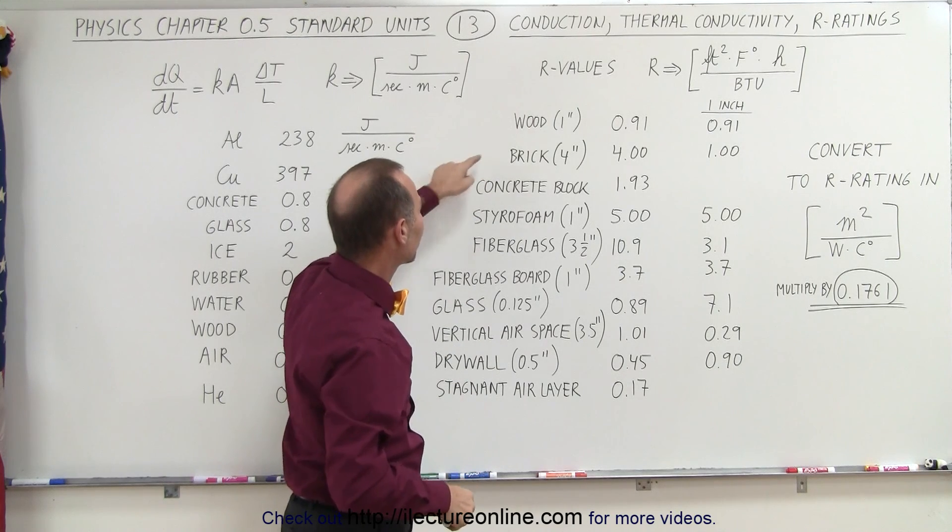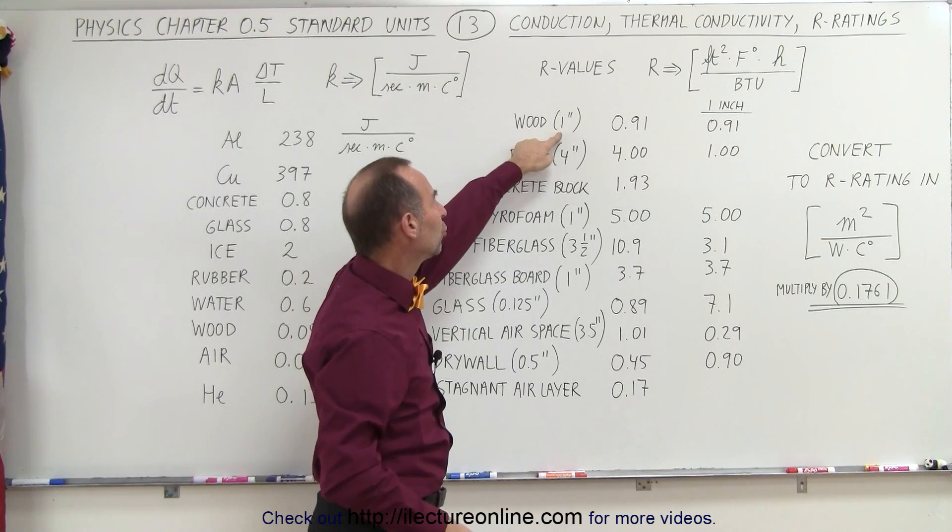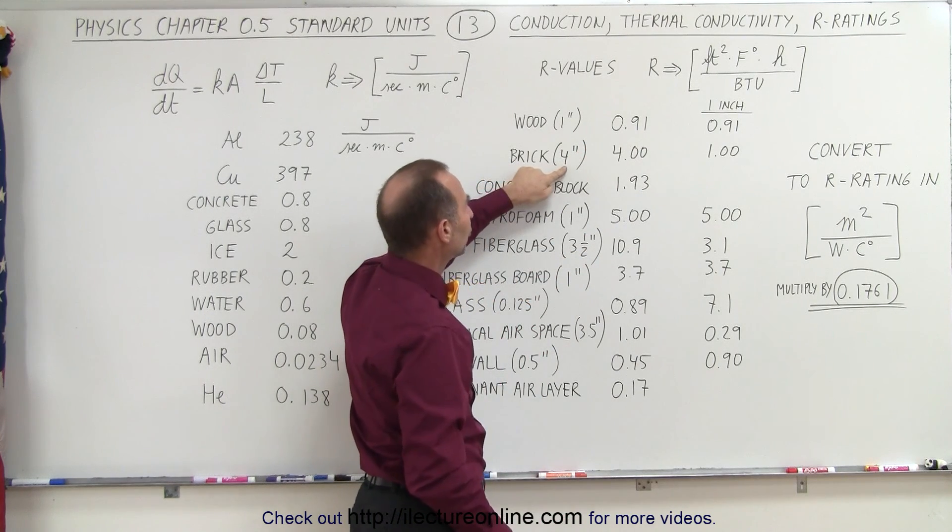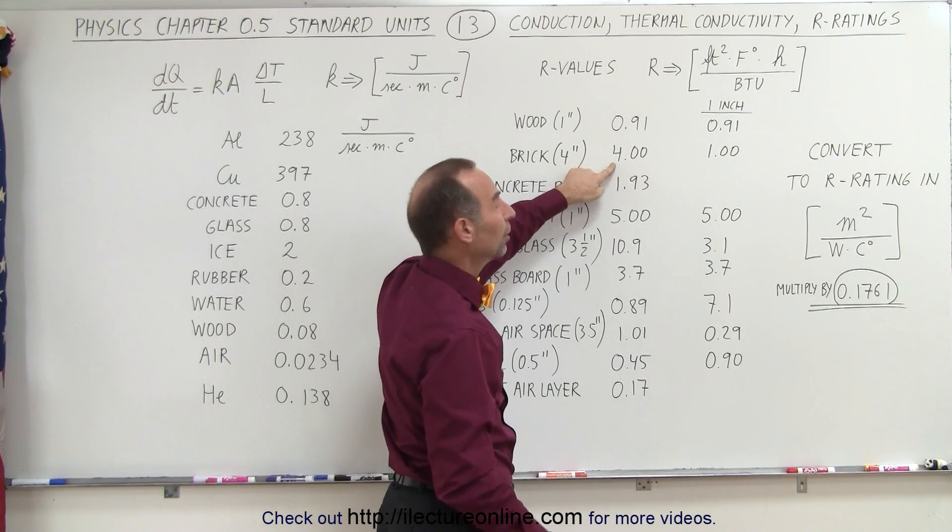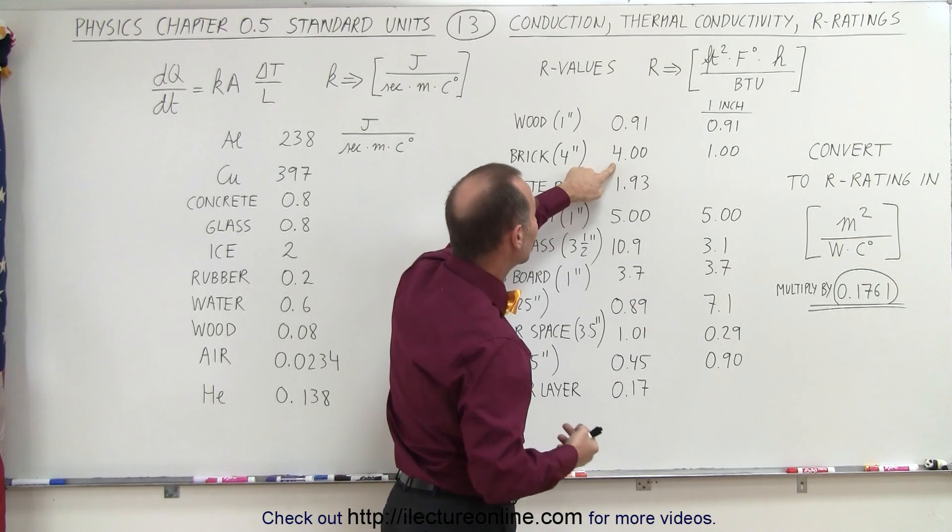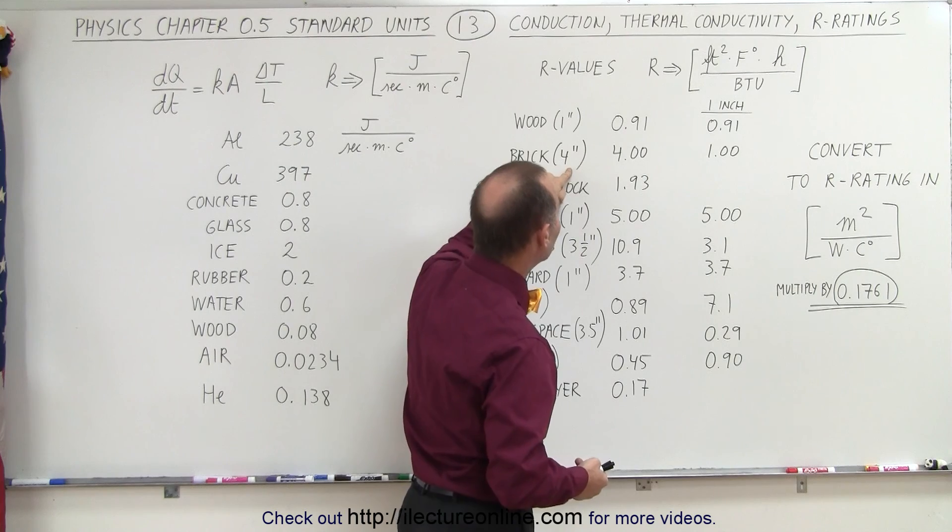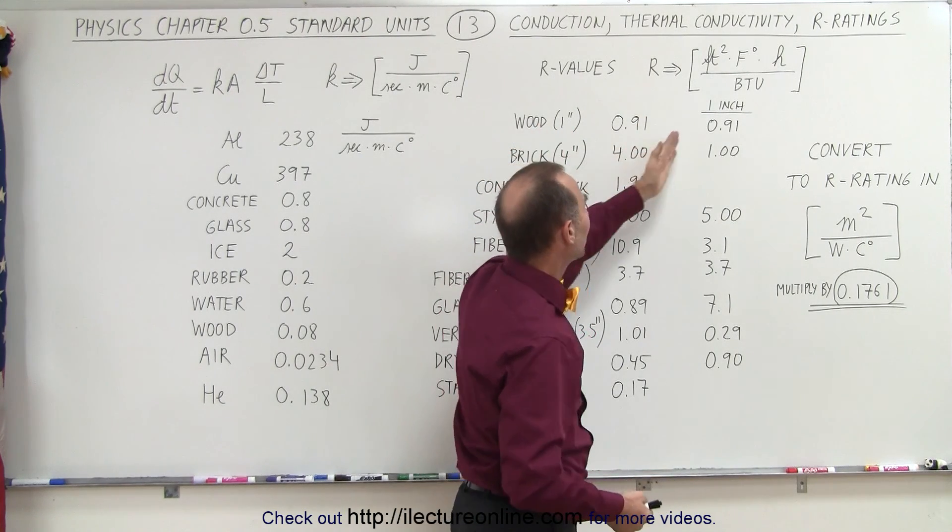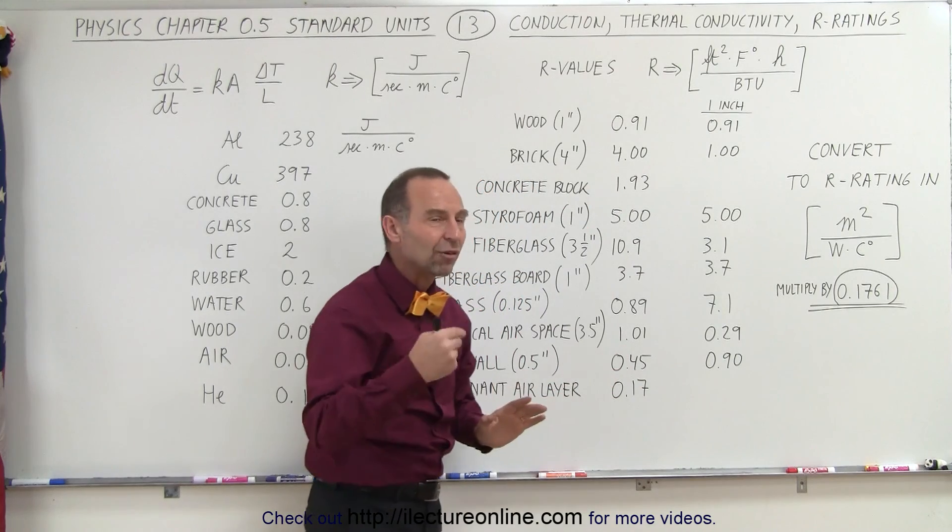Here we have some building materials. For example, wood one inch wide has an R rating of 0.9. Brick four inches wide has an R rating of 4. In other words, it resists heat transfer about four times as much, but it's four times as thick. If we compare it inch by inch, wood and brick have about the same resistance to heat traveling through them.